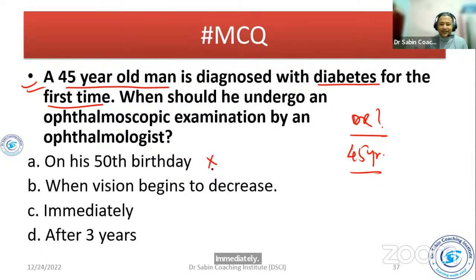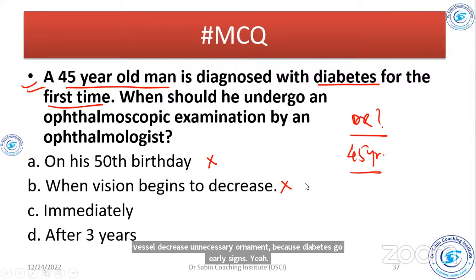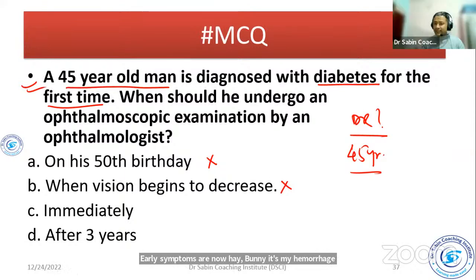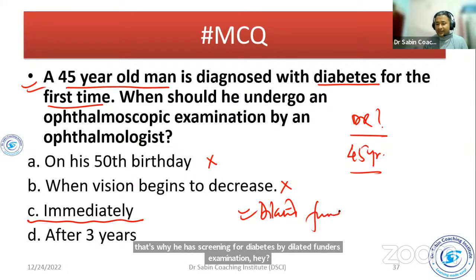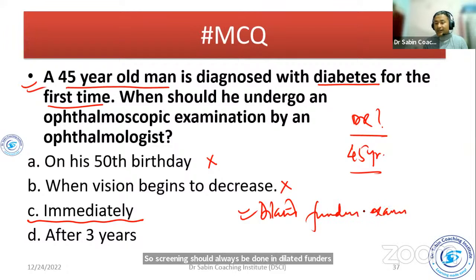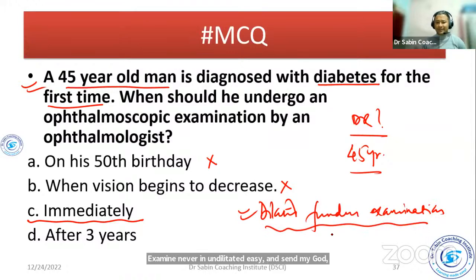We should not wait for his 50th birthday. He has to undergo screening for diabetic retinopathy by dilated fundus examination immediately or as early as possible. Screening should always be done by dilated fundus examination; without dilation, findings may be missed.